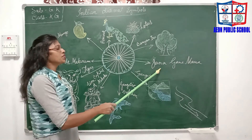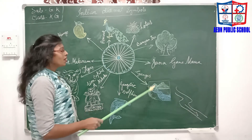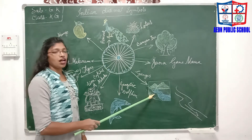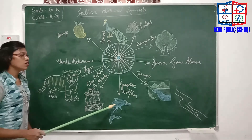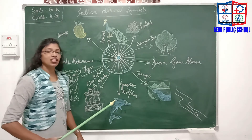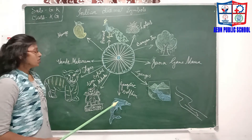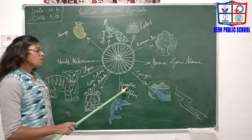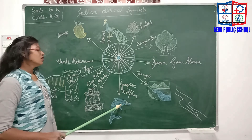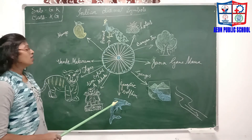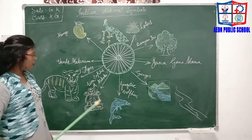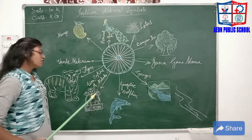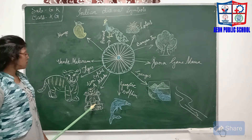Who has written the national anthem? Rabindranath Tagore has written it. What is our national river? The Ganges is our national river. What is our national aquatic animal? Aquatic means the animal that lives in water, so the answer is the Gangetic Dolphin. What is our national emblem? The Lion Capital of Ashoka is our national emblem.